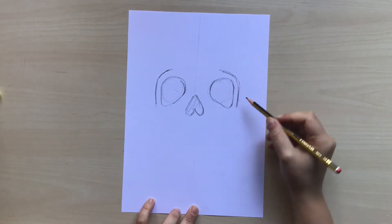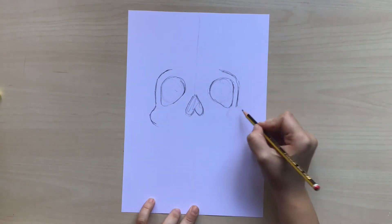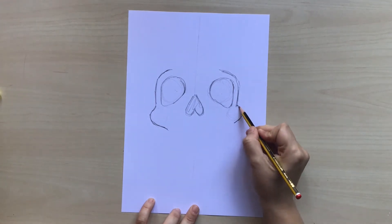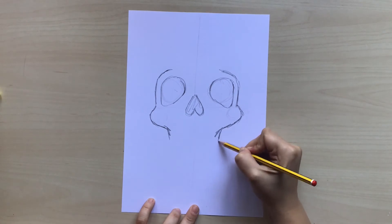Now let's think about the cheekbones as two circles right underneath the eyes. We are going to follow that circular motion of the cheekbones that is going to go all the way inside to the down part of the nose.